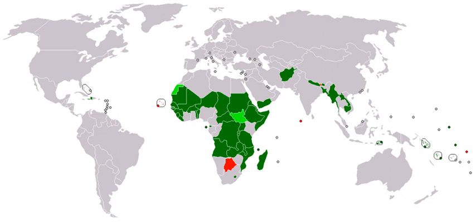Instead, the World Bank classifies countries into four groups based on gross national income per capita, reset each year on July 1. In 2016, the four categories in U.S. dollars were: low-income countries at $1,025 or less; lower-middle-income countries at $1,026 to $4,035; upper-middle-income countries at $4,036 to $12,236; and high-income countries at $12,237 and above.